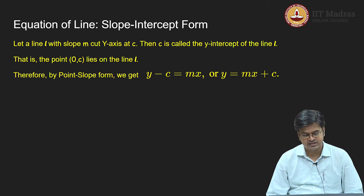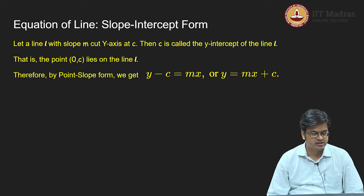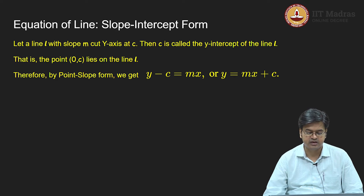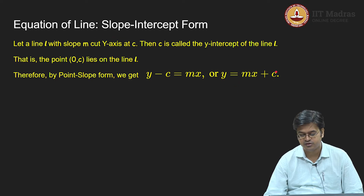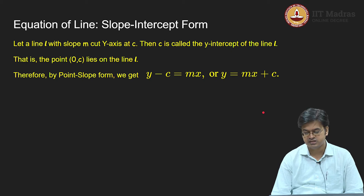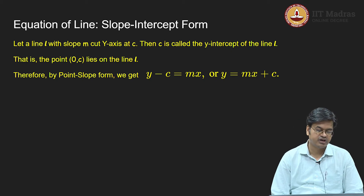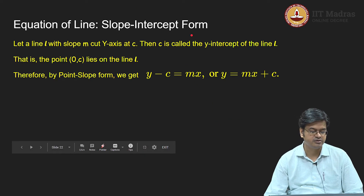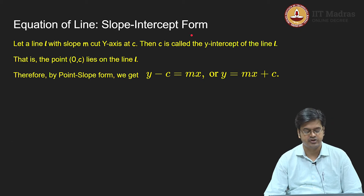The interesting fact is that calculations are very simple whenever you are given the slope-intercept form. For example, if you know the y-intercept is C and the slope is m, you do not have to do any calculations — you can straight away write y equals mx plus C as your answer. The calculations simplify significantly when using slope-intercept form. If the intercept is not available, then you may have to go to the point-slope form.